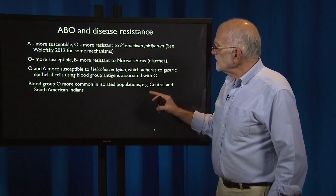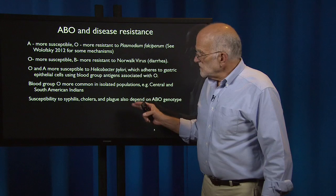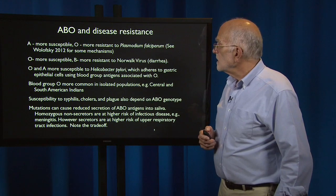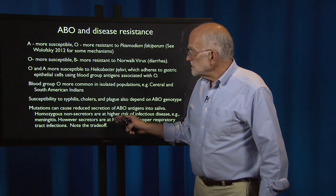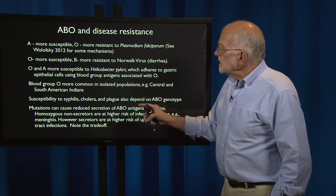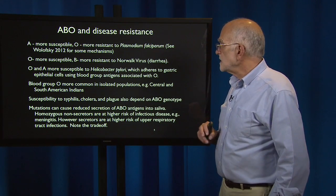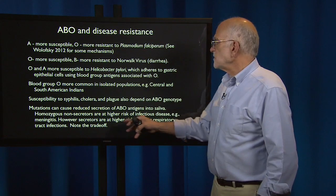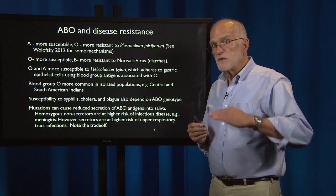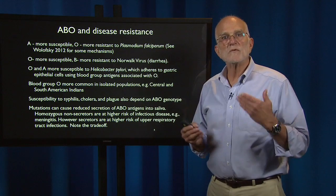Blood type O is more common in isolated populations in Central and South American Indians. Susceptibility to syphilis, cholera, and plague also depend on ABO genotype. Mutations can cause reduced secretion of ABO into saliva, and those who are homozygous non-secretors are at higher risk of infectious disease, for example meningitis. However, secretors are at higher risk of upper respiratory tract infections. So even within this system, how much of it is expressed leads to a trade-off between susceptibility to meningitis or to upper respiratory tract problems.